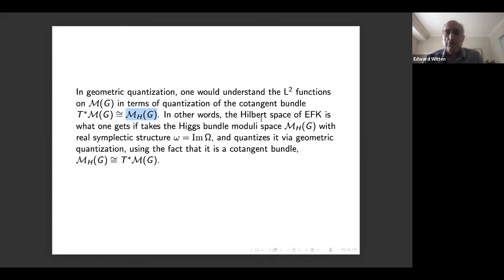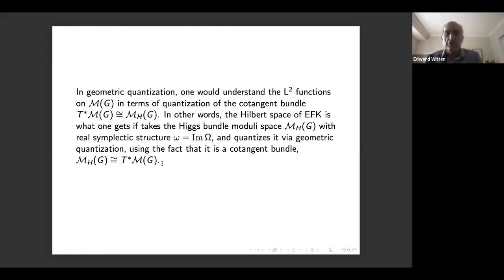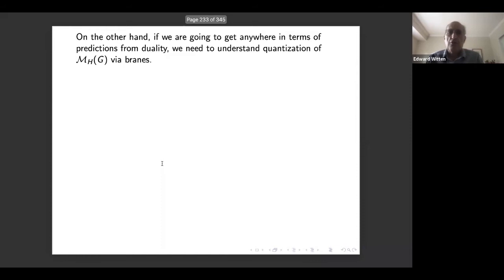The Hilbert space of EFK is what you get if you take the Higgs bundle moduli space with its real symplectic structure and quantize it by geometric quantization, treating it as a cotangent bundle. The Hilbert space isn't mysterious — it's just the natural quantization of a cotangent bundle. But if we just call it that, we won't understand what to do with the EFK operators. If we're going to get anywhere in terms of predictions from duality, we need to understand this quantization in terms of branes, and that's why I told you about brane quantization.